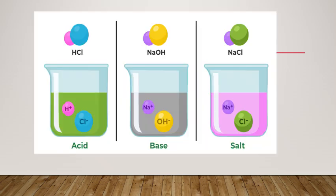When HCl, which is an acid, is dissolved in water, it undergoes ionization — HCl splits up into H+ and Cl−, that is hydrogen ion and chloride ion are getting separated.